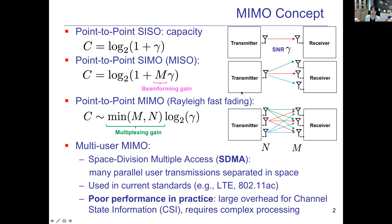Further, if we consider multiple antennas at both the transmitter and receiver sides, we get a point-to-point MIMO link. Theory tells us that the capacity is multiplied by a term called the multiplexing gain, which is the minimum of the transmit and receive antenna counts. By considering multiple users, we obtain a multi-user MIMO system, and in particular we can perform space division multiple access, or SDMA, whereby many parallel user transmissions can be separated in space.